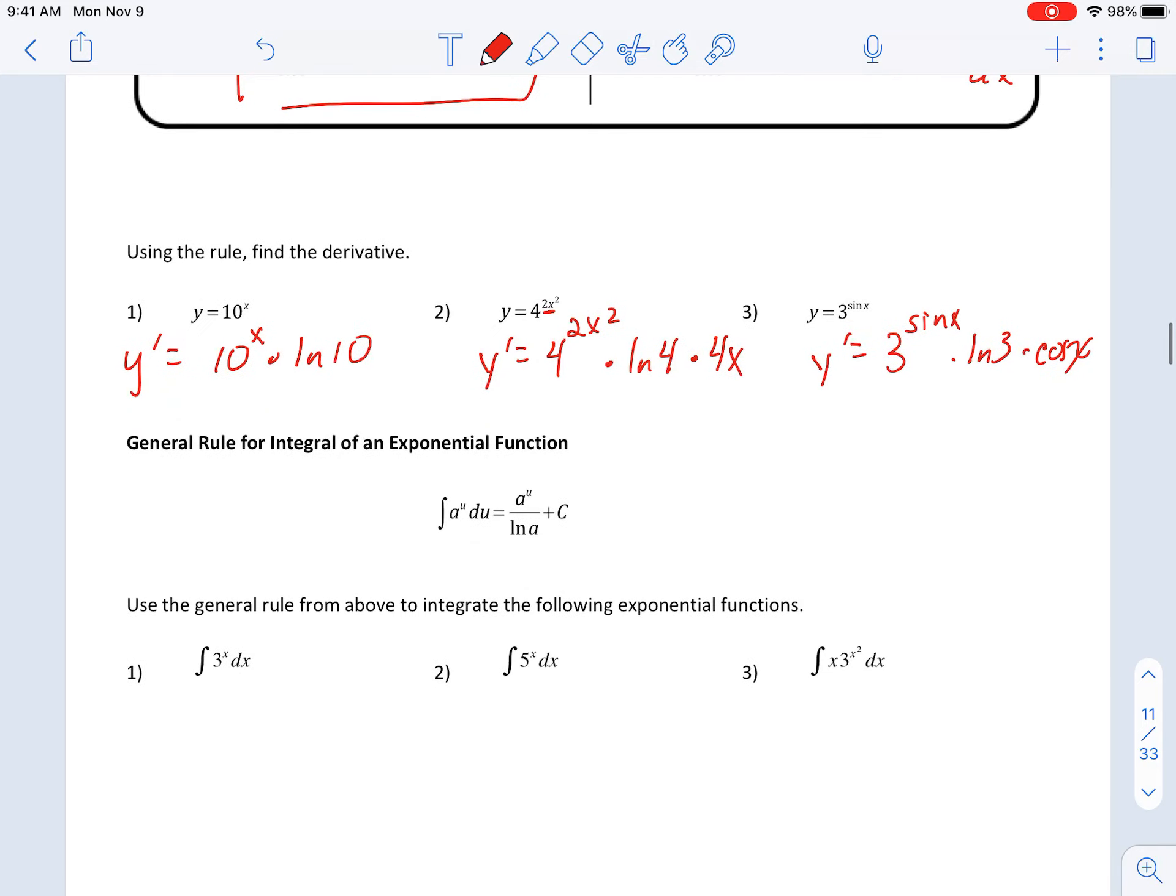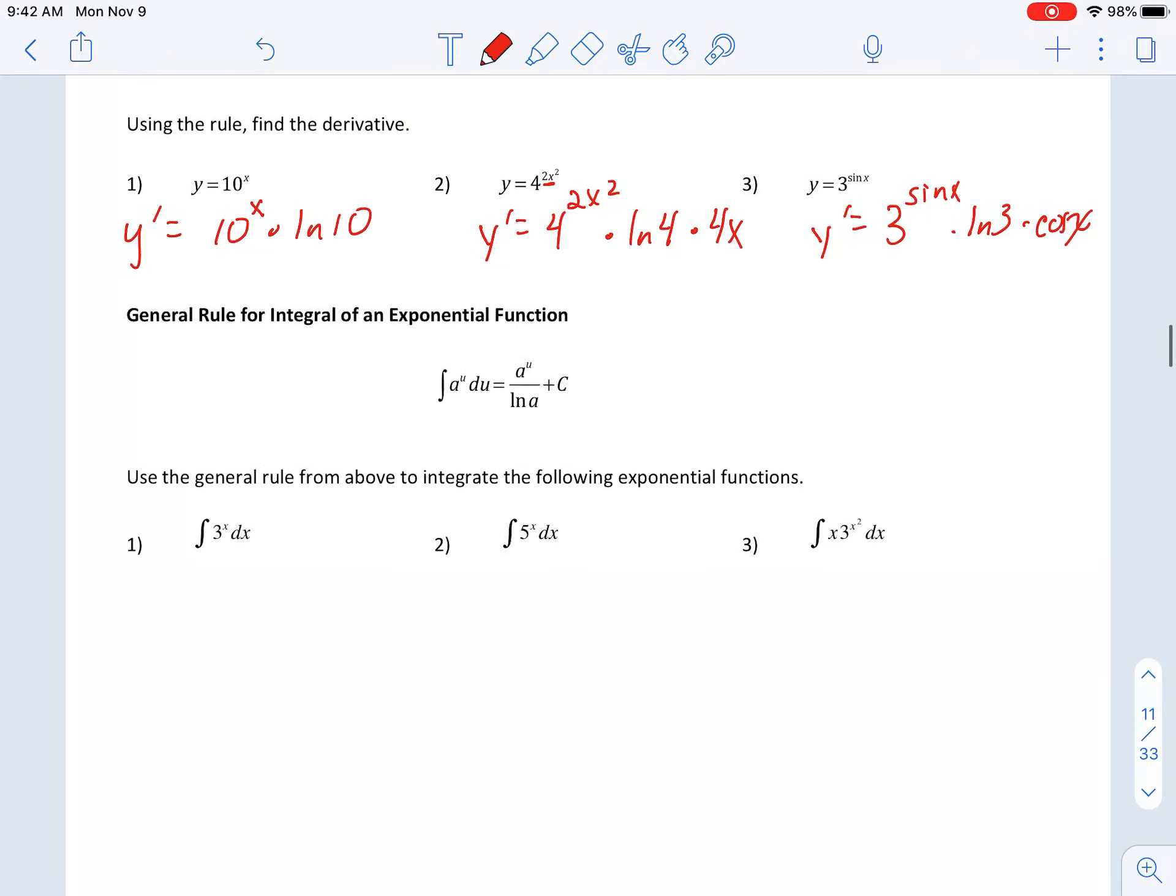So then, doing the antiderivative, we're just going to go the other direction. So the antiderivative of a to the u is still a to the u. You still have an exponential. But this time, you're going to divide by natural log of a instead. And remember, if it's an indefinite, you don't have bounds. You need to make sure you put that plus c.